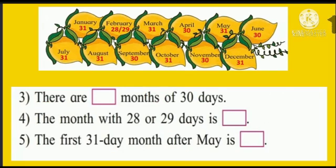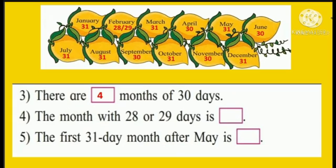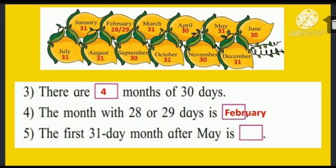Now next: there are dash months of 30 days. How many months have 30 days? April 1, June 2, September 3, and November 4. So we will write here 4. Now next: the month with 28 or 29 days is dash. Students, tell me which month? Yes — February.